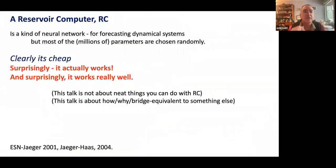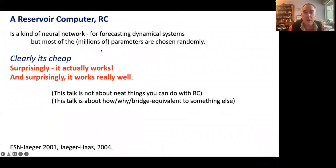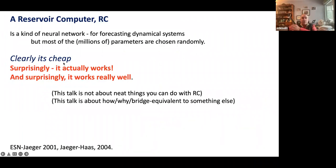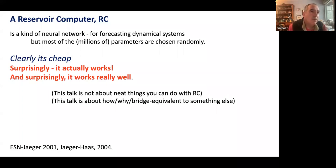There are some bits about random projection, and this is influenced by my take on evolution operators — DMD is an evolution operator estimator for Koopman operators, its adjoint. So: a reservoir computer, or RC, is a kind of neural net for forecasting dynamical systems. Unlike most artificial neural nets, most of its parameters are just chosen randomly.